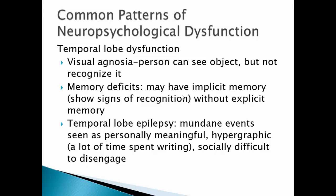Temporal lobe dysfunction can cause visual agnosia, where a person can see an object but can't recognize it. It can cause memory deficits where a person may have implicit memory and show signs of recognition but lack explicit memory — unable to describe the memory or identify a person. Temporal lobe epilepsy is another symptom and can involve people seeing mundane events as very meaningful, becoming hypergraphic — spending a lot of time writing — and having difficulty disengaging socially.